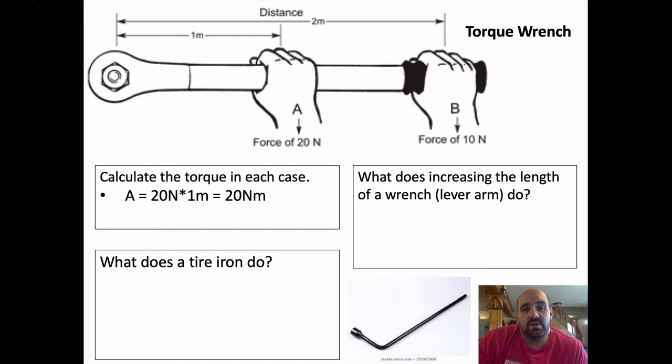Alright. So in case A, the force is 20 Newtons. They tell us that it's going straight down, a force of 20 Newtons right here. We also know that it is one meter away and torque is force times distance. So 20 times one is 20, 20 Newton meters. This one over here, B is a force of 10 Newtons, but it's two meters away. They're using the longer end of the wrench. They're using the whole wrench. So B is 10 times two, which is also 20. So in each case, you get the same amount of torque. But in case B, you only had to apply half the force. So I think that leads us to our answer to the question on the right. What does increasing the length of a lever arm do? Well, it allows you to get more torque for either the same force or allows you to get the same torque for less of a force.